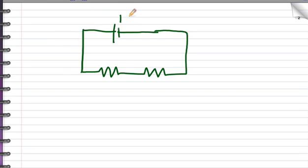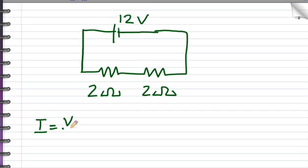So for example, let's say this is a 12 volt battery and each of these resistors has a resistance of 2 ohms. If we want to calculate the current in the circuit, we'll use Ohm's law. Current equals voltage divided by resistance. The voltage in the circuit is 12 volts and the total resistance is 4. When resistors are in series, you just add them like normal numbers. 12 divided by 4 gives you a current of 3 amps.